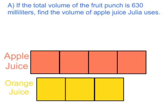Now, if the total volume is 630 milliliters, how much apple juice does she use? Here is all the juice being added — the total punch. 4 parts of apple juice to 3 parts of orange juice. We're told she uses 630 milliliters total, and there are 1, 2, 3, 4, 5, 6, 7 parts. So the strategy we want to use is finding out what just one of these units is — how many milliliters are in one of these 7 units.